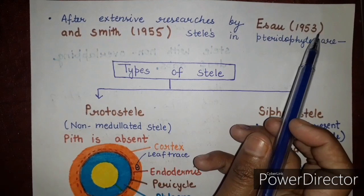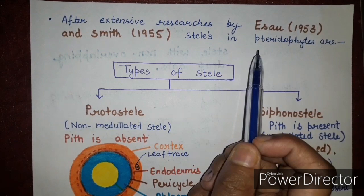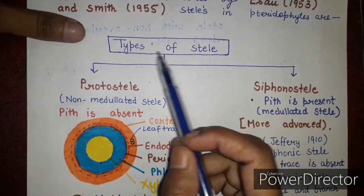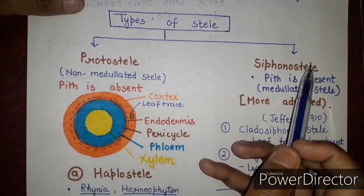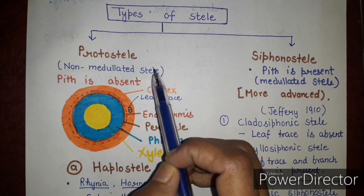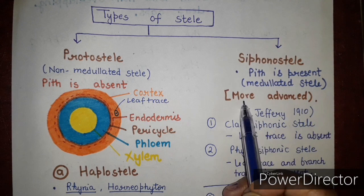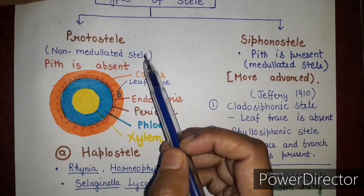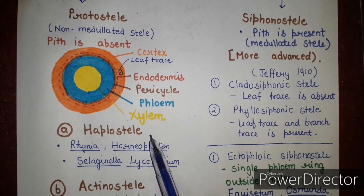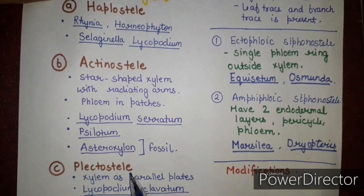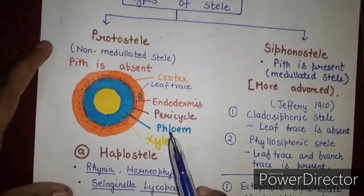After extensive research by Isau in 1953 and Smith in 1955, steles in pteridophytes are classified into protostele and siphonostele. Protostele is a non-medullated stele where pith is absent, while siphonostele is a medullated stele where pith is present and is regarded as the more advanced form. Protostele can be further classified into four types: haplostele, actinostele, plectostele, and mixed protostele.